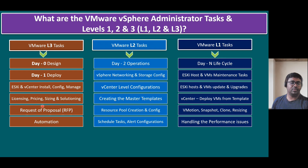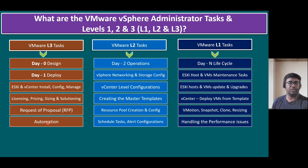Regarding automation: once design and implementation is completed, the L3 team looks at whatever repeated tasks L2 and L1 are performing and plans automation for them. They may use third-party external automation tools, or VMware's automation tool — vRealize Automation (VRA), now called ARIA Automation — to automate all day-two tasks.